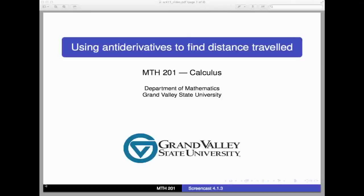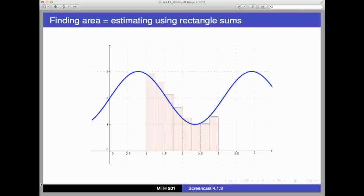Hi, and welcome to this screencast where we're going to use antiderivatives to find the distance traveled by a moving object. Let's recap what we know so far about finding distance traveled by a moving object. What we know is that to do this, we need to have a graph or table present that gives us the velocity of the object. Then we estimate the distance traveled by the object over a time interval by subdividing the time interval appropriately and then forming a rectangle sum. The sum of the areas present estimates the distance traveled.